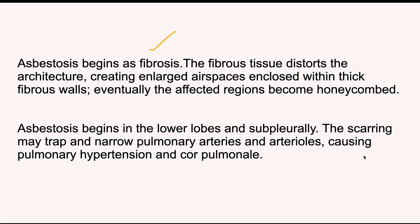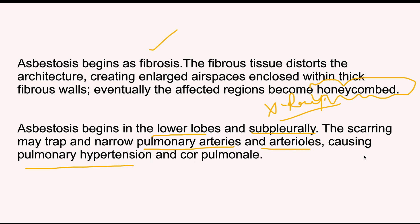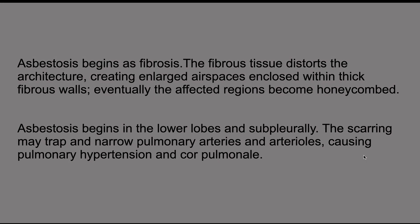Asbestosis always begins as fibrosis. The fibrous tissue distorts the architecture, causing enlarged air spaces to be surrounded by thick fibrous walls — this appearance is known as the honeycomb appearance, which is also seen on chest x-ray. Asbestosis mostly begins in the lower lobes and subpleurally. It can also involve pulmonary arteries and arterioles, and therefore can cause pulmonary hypertension or cor pulmonale — a complication of asbestosis caused by the fibrosis entrapping the pulmonary arteries.